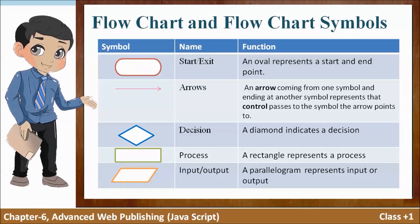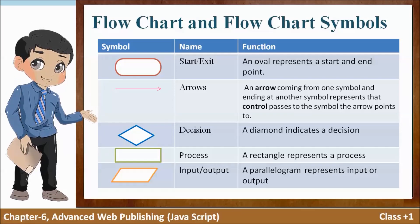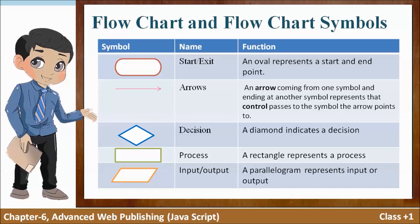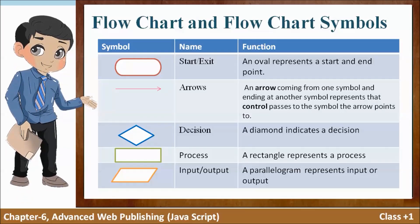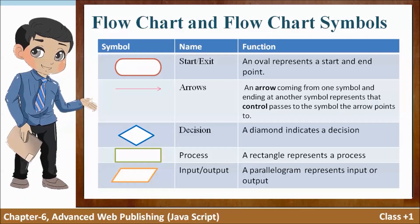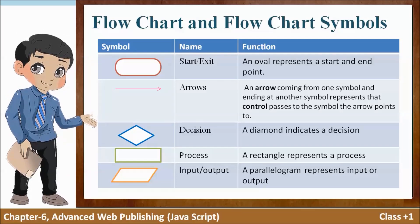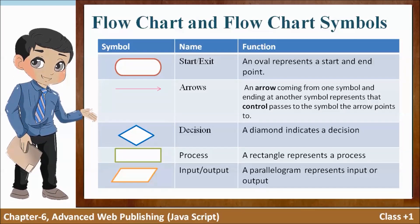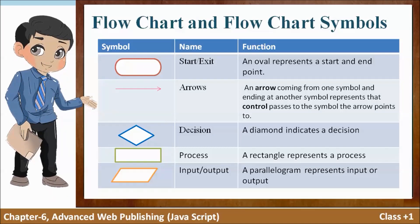Next is diamond symbol. Diamond symbol jo hai decision ko represent karta hai. Next is rectangle symbol — rectangle symbol process ko represent karta hai. And last one is parallelogram — yeh input aur output ko represent karta hai.